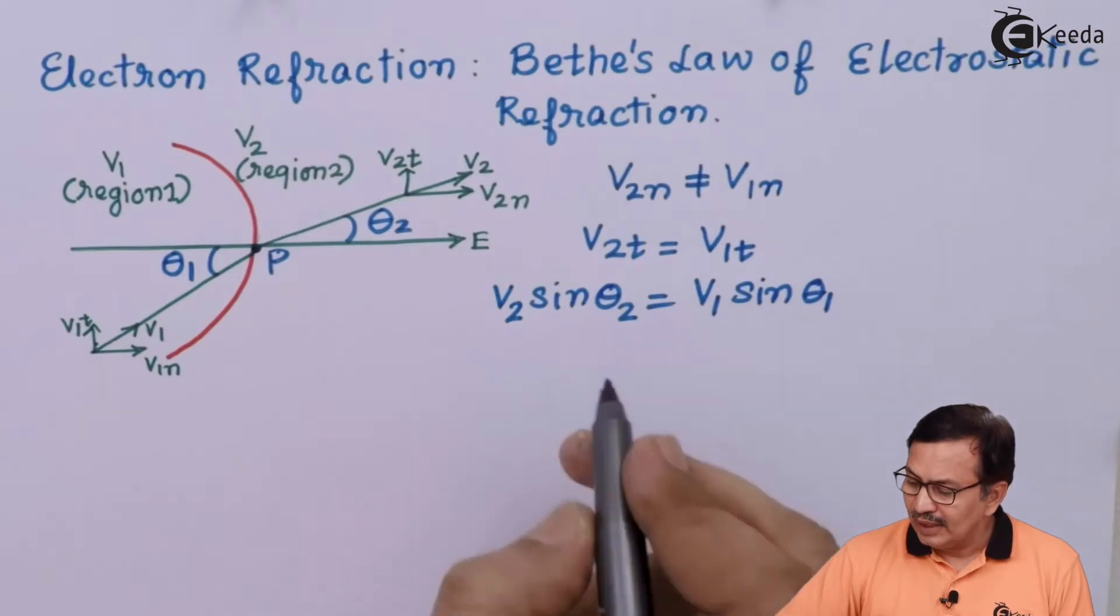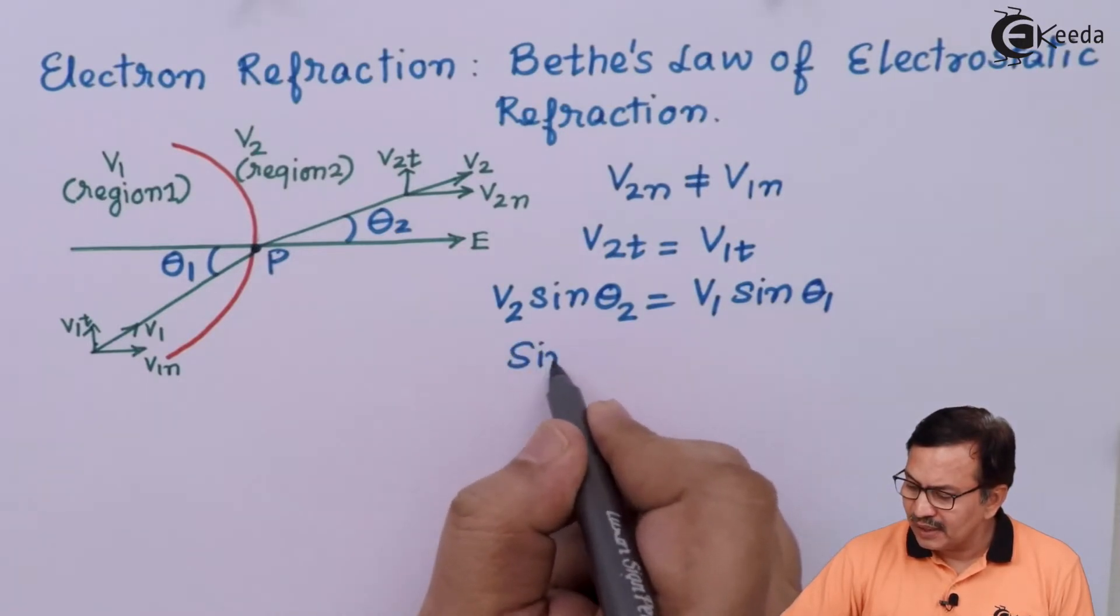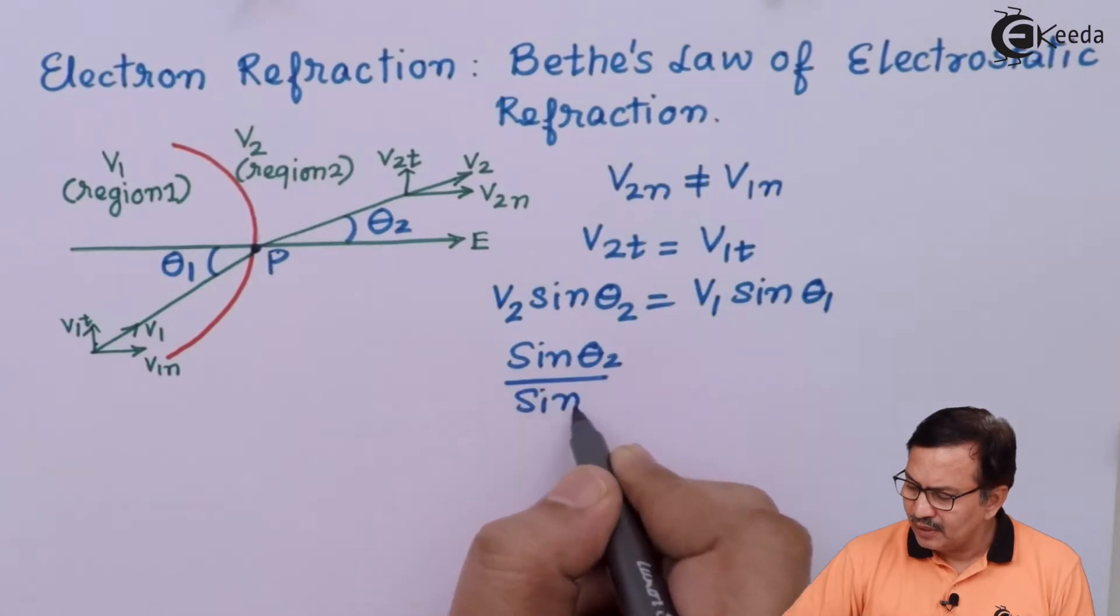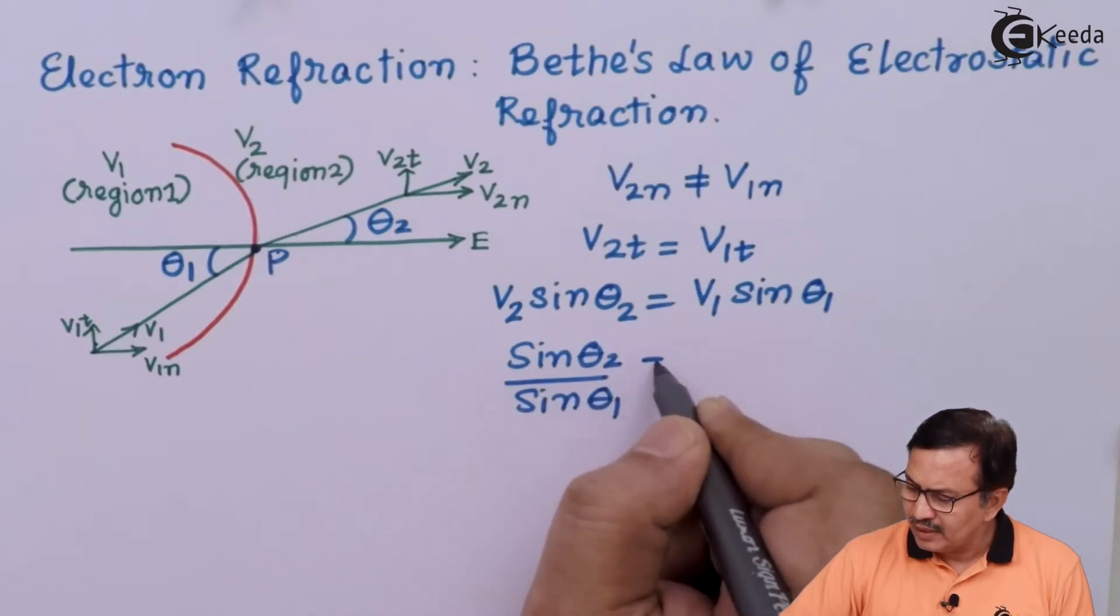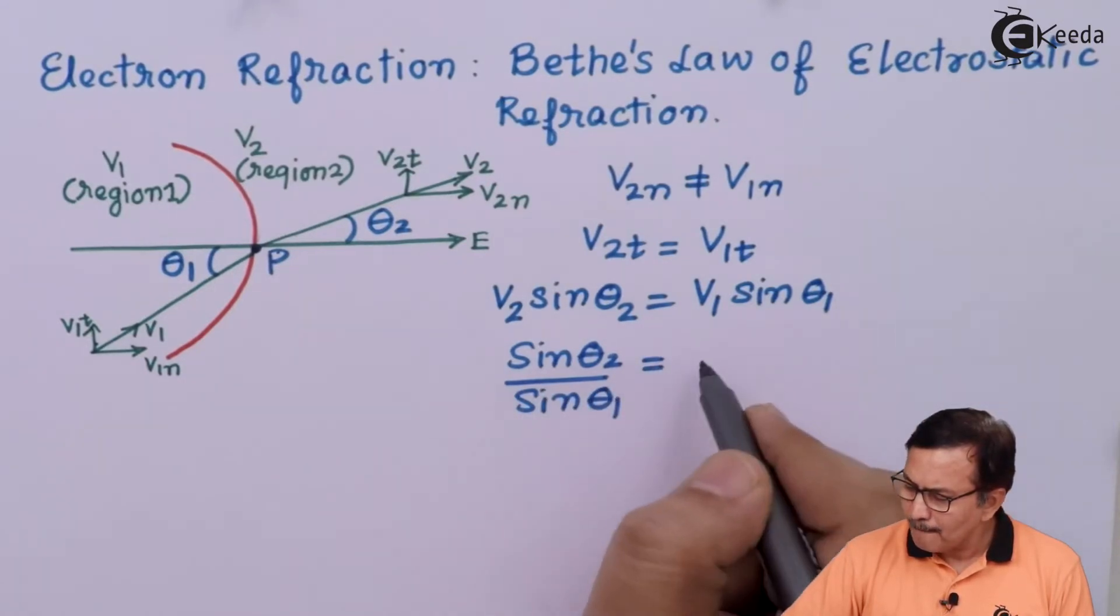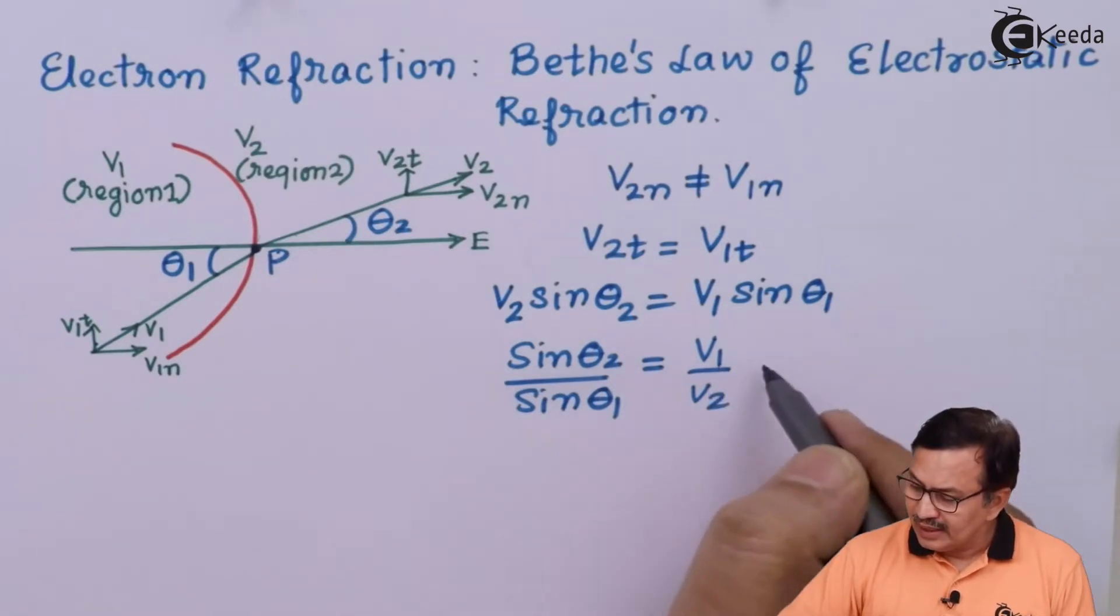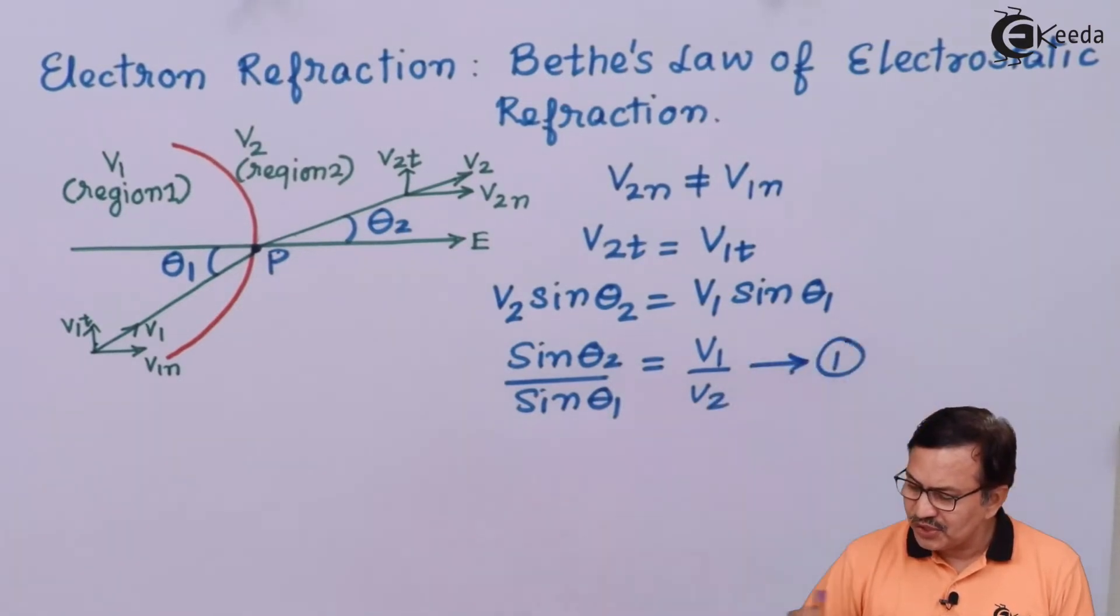And therefore, your sin of theta2 upon sin of theta1 is equal to V1 upon V2, the ratios of the velocities. Let us call this expression as 1.